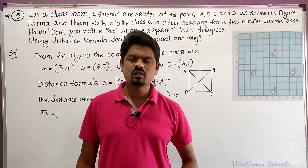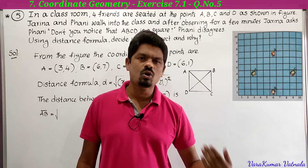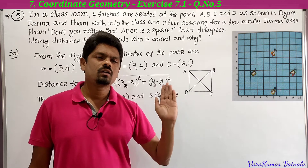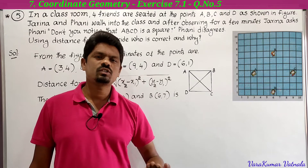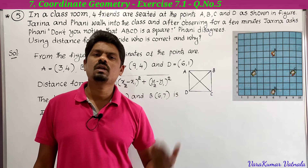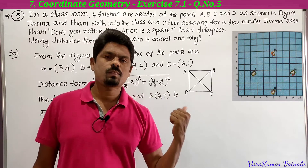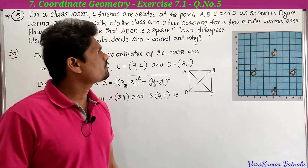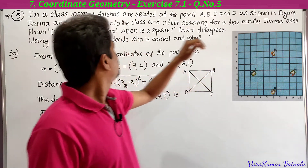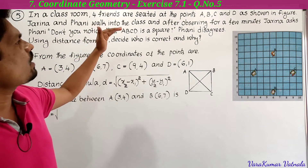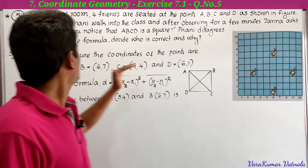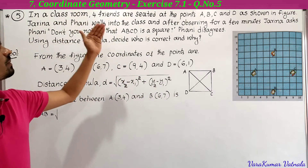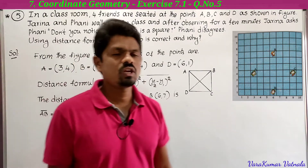Hi, hello, welcome to my channel. Today we are going to solve a problem from the seventh chapter, coordinate geometry, exercise 7.1, fifth problem. We have already completed the introduction and problems one through four — links are in the description. So this is the fifth problem. In a classroom, four friends are seated at points A, B, C, and D as shown in the figure. Jarina and Funny walk into the class and after observing for a few minutes, Jarina asks Funny: don't you notice that ABCD is a square? Funny disagrees. Using the distance formula, decide who is correct and why.